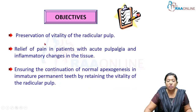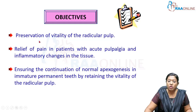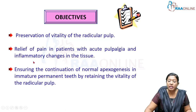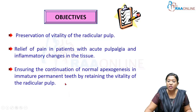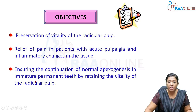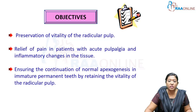The main objective of pulpotomy is preserving the vitality of the radicular pulp by removing only the infected or inflamed coronal pulp while maintaining the healthy radicular pulp. A second objective is relief of pain in patients suffering from acute pulpitis and inflammatory changes in the pulp tissue. A third important objective is ensuring normal apexogenesis — the normal physiological root development, especially in immature young permanent teeth with a wide open apex — thereby preserving the vitality of the radicular pulp.